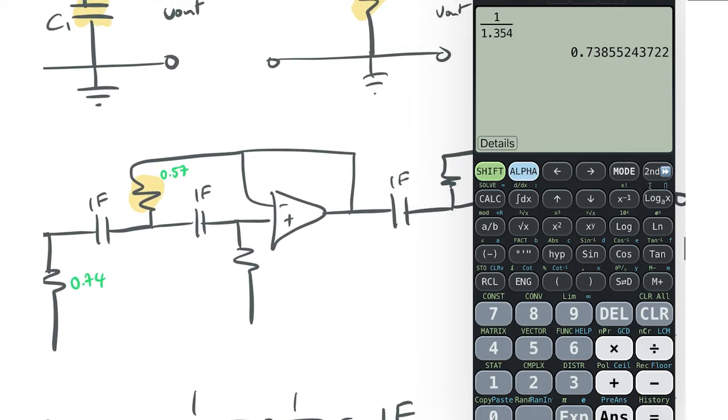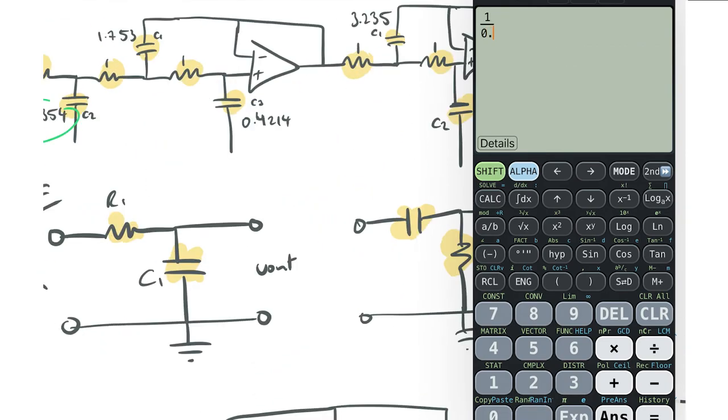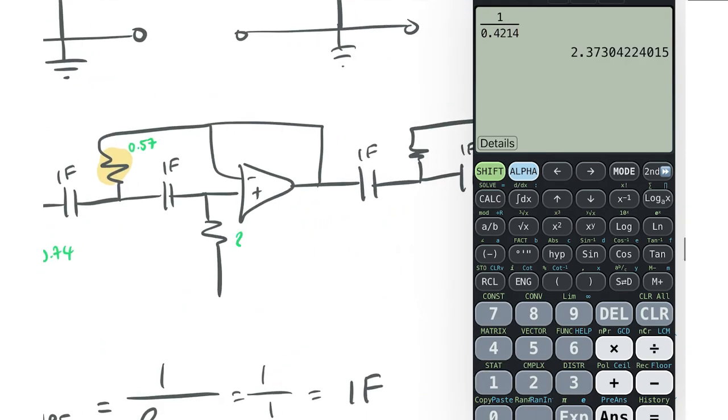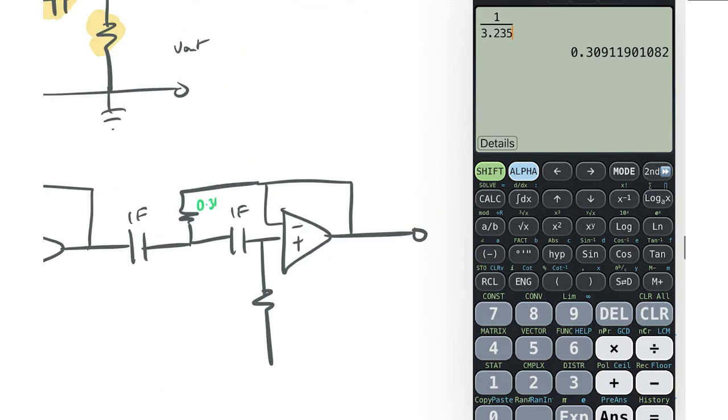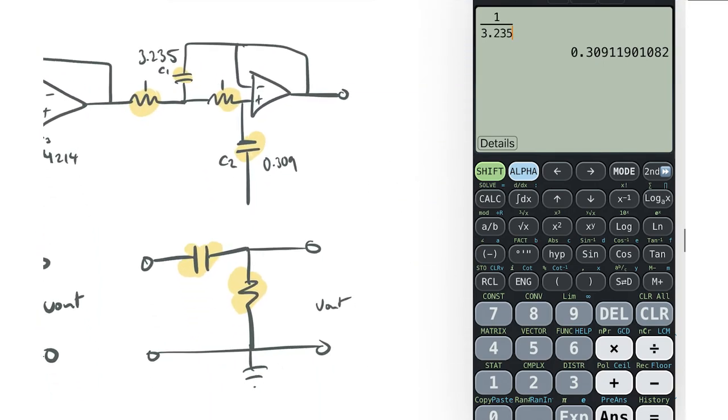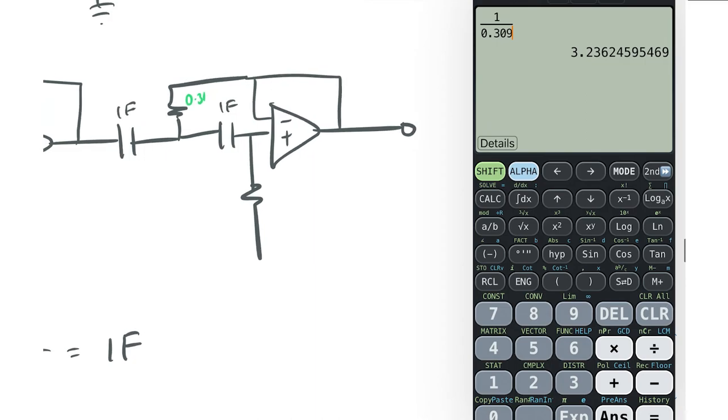And literally just do the same thing again for the rest of these. So this resistor here, 0.4214. So that gives us 2.38. Now last two, we've got 3.235, 0.31. And finally, we've got 0.309. That gives us 3.24.